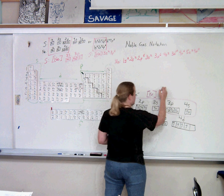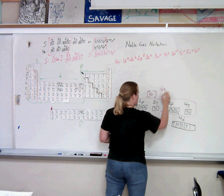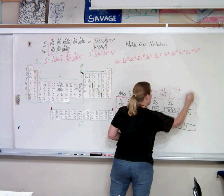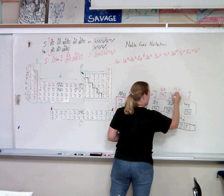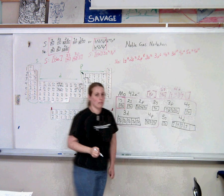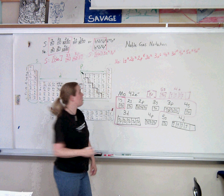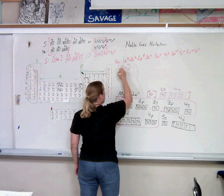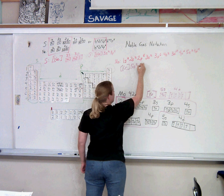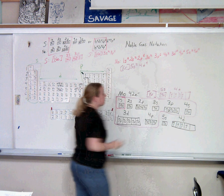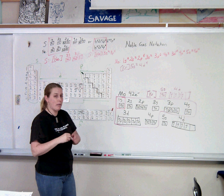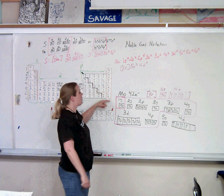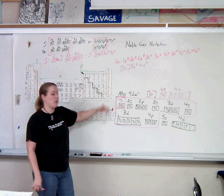So molybdenum has 5s and 4d. So that would be a noble gas notation. And up here, it would be Kr 5s2 4d4. So it doesn't matter how big the element is, because all elements have a noble gas before them. You can just go back up to that noble gas and then add whatever comes after that.